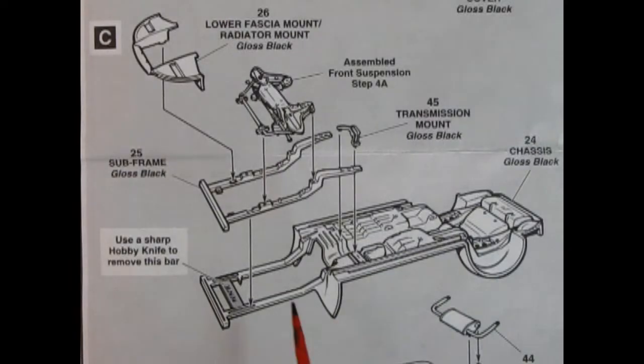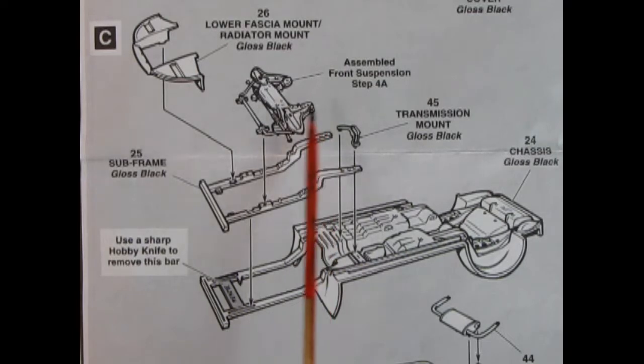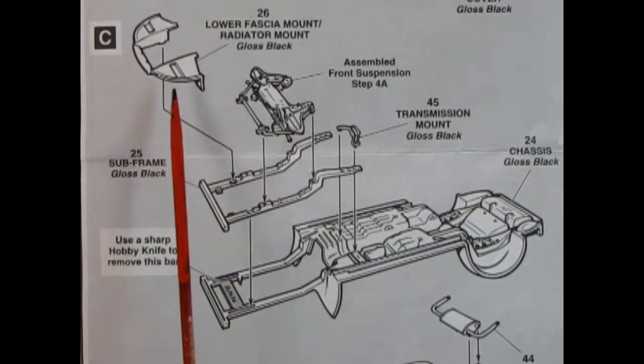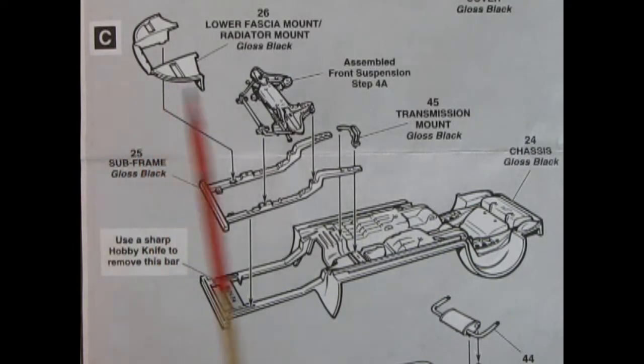In panel C we've got this wonderful chassis here and there's even a subframe up front which gets glued in. There's a section here to remove out of the frame, a transmission mount which ties these two together, and the assembled front suspension will go in here as well. You get the lower fascia front mount and the radiator mount which also glues up to our subframe.